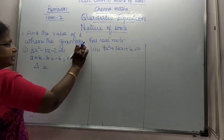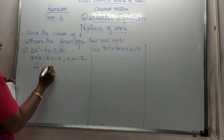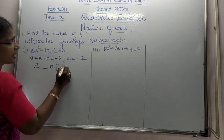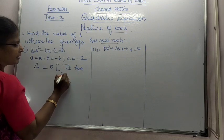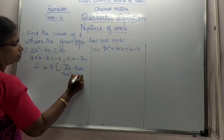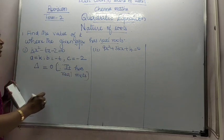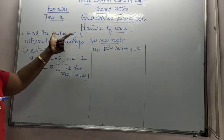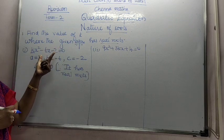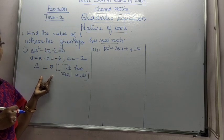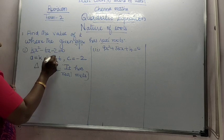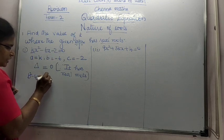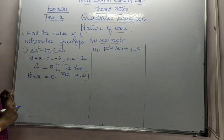Del is equal to b squared minus 4ac. Since it has real roots, del is equal to 0. We can find out the answer. Now del is equal to b squared minus 4ac is equal to 0.